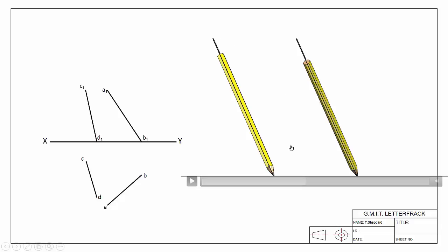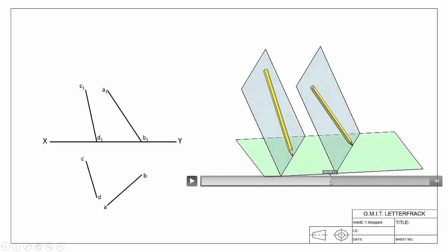Two identical parallel planes. Let's go to our 3D view to see what that looks like. Here's plane number one and here's plane number two. This plane contains this line — the line is resting against the plane like a sheet of glass — and this plane contains this skew line. They're identical in every way, shape, and form except for position.